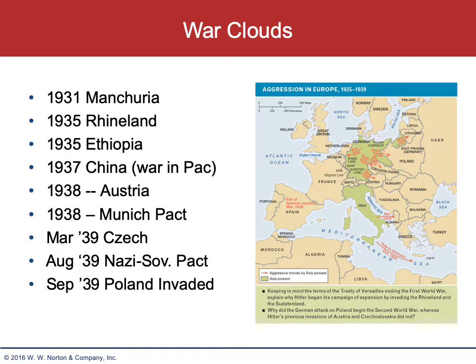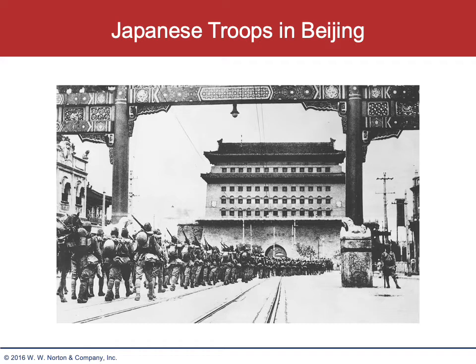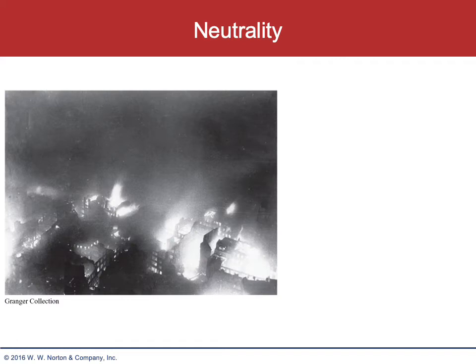With that agreement literally still wet — the ink not dry yet — Germany invaded Poland on September 1st. War was declared on Germany by Britain and France, and World War II was officially afoot. Here you can see Japanese troops actually entering Beijing at the Marco Polo Bridge, the beginning of what some people would say is the true beginning of the war.